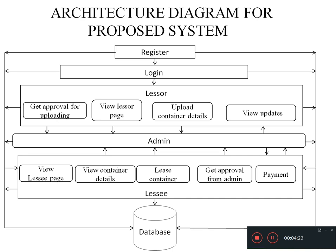Similarly, after registration and login, the lessee can view the lessee page and view the container details. To lease the container, they have to get the admin's approval. After getting the admin's approval, they can lease the container, and then they have to once again get the approval of the admin for doing the payments. After doing the payments, they can lease the containers easily. All this data will be stored in the database, which is managed by the admin, who is the authorized person.